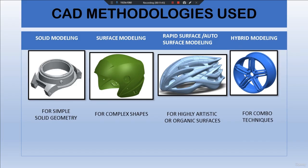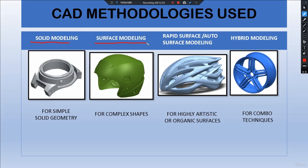The last methodology is hybrid modeling. Suppose we need to perform both surface modeling and solid modeling on a single component — that means using more than one type of modeling on a single component, which is known as hybrid modeling. These techniques can be solid modeling plus surface modeling, surface modeling plus rapid surfacing, or all three combined. In this course, we will focus on solid modeling and surface modeling.